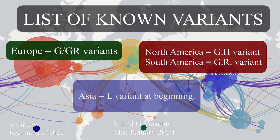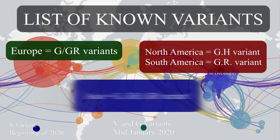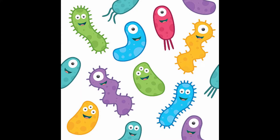In Asia, L variants were most common at the beginning. As time goes on, G, GH, and GR variant cases also increased. Depending on the variant, they have their own characteristics and unique aspects.